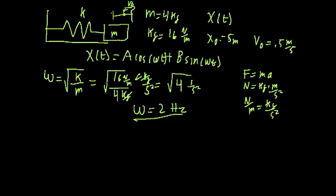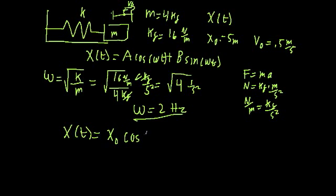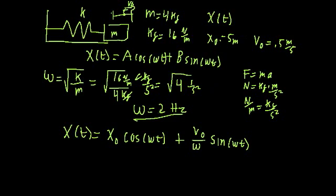Now that we know omega, to find our particular solution with these initial conditions, we use the fact that we know the position and velocity at t equals 0. We plug t equals 0 into the general solution and its derivative. From that process, we found that x(t) equals x₀ cosine(ωt) plus v₀ divided by ω times sine(ωt). We know x₀, v₀, and omega, so let's plug them all in.